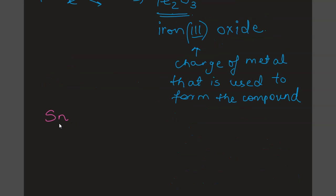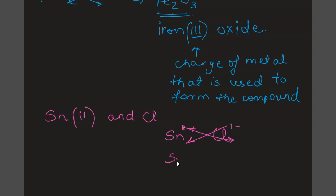Let's form a compound between Sn(II) and chlorine. Sn is given as two positive. From the periodic table, chlorine is one negative. After crisscrossing, this gives us SnCl2. To name it: Sn is tin, we place the charge number 2 in brackets, and the non-metal name ends as '-ide' — chloride. So the name is tin(II) chloride.